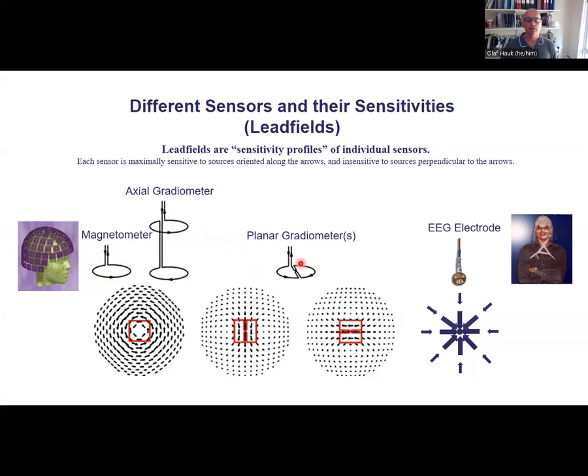And then there are also planar gradiometers. In this case, you have a similar arrangement. One coil here, one coil there. They are subtracted from each other, but they are next to each other in the same plane. It has the same effect. Homogeneous magnetic fields will cancel each other out. That means distant sources will be suppressed. Nearby sources will produce the biggest difference in these two coils. But this also has the effect that you have a different kind of sensitivity profile here, a different kind of lead field. And now the source that's underneath the sensor actually produces the biggest difference. That means in this case, if you put a lot of them around the head and you see a peak in your distribution without doing any source localization, you have at least some evidence that there is a source close by.